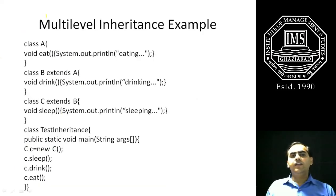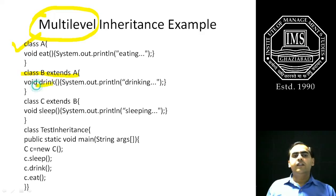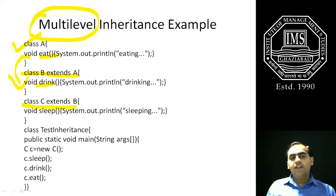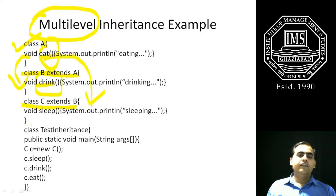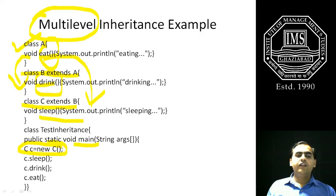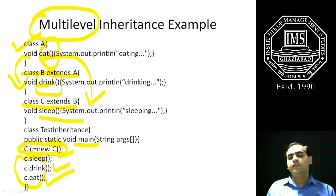Similarly, we can implement multi-level inheritance. We have class A as the base class. Class B inherits from class A using the extends keyword, so class B has its own drink method and the eat method derived from class A. Then class C extends B, so class C inherits the properties of class B — both the drink and eat methods are derived into class C, and class C also has its own method called sleep. In the main method, we create an object of class C and can call all three methods: the eat method of class A, the drink method of class B, and the sleep method of class C using the object of class C. This is the basic idea of how we can reuse methods across classes with inheritance.